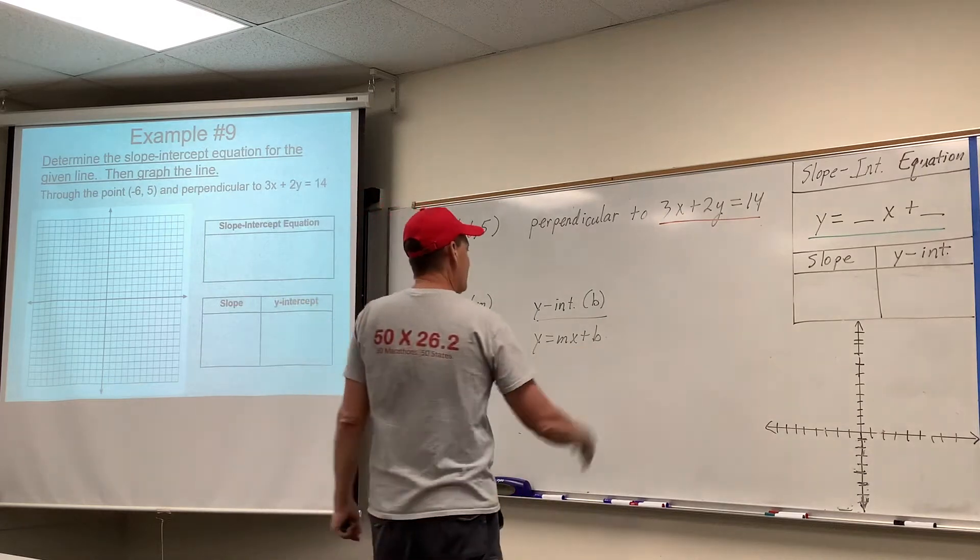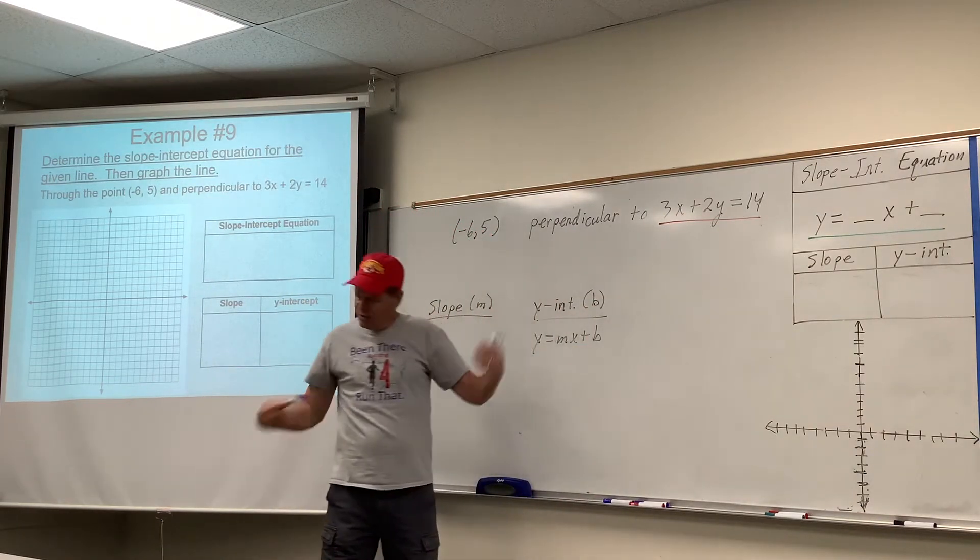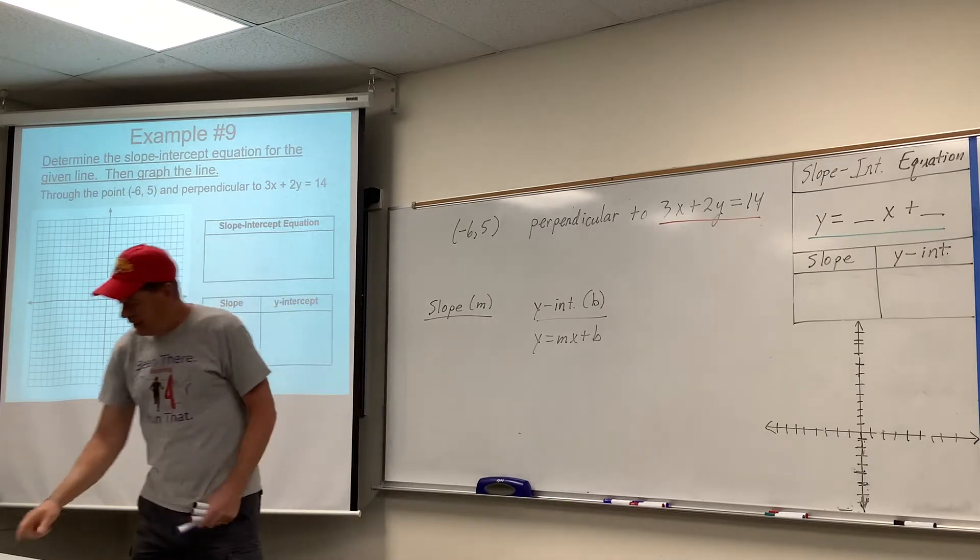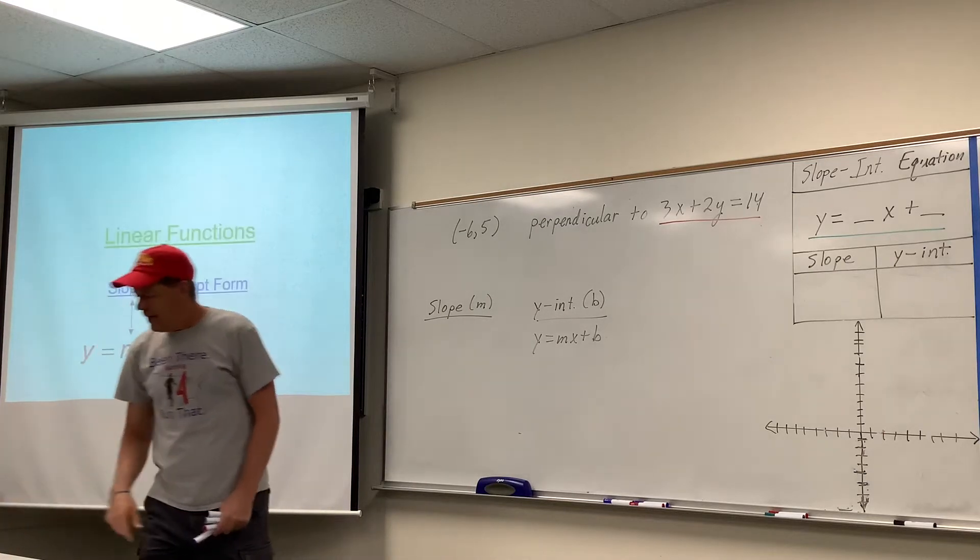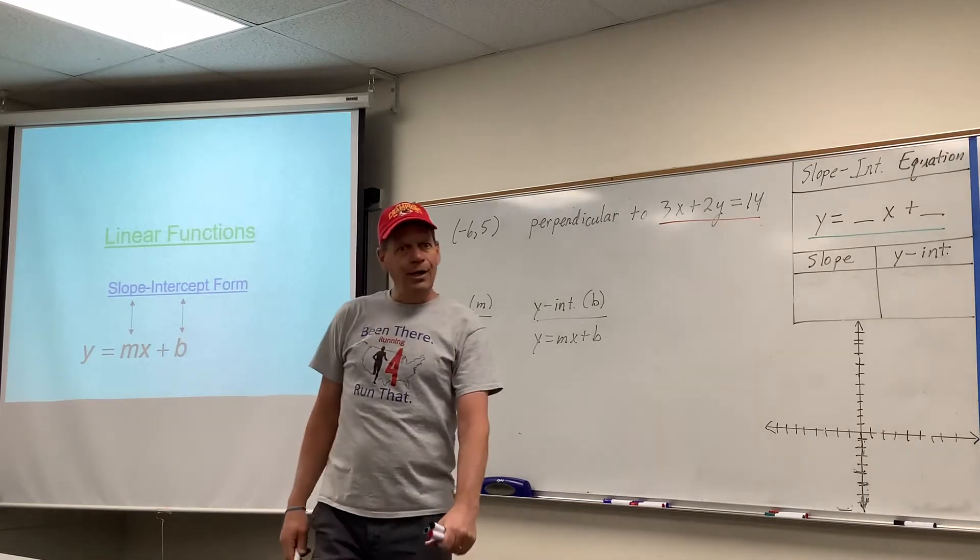So the one they gave us, let's start with that. If we were going to graph that, and this is good practice for that kind of question, let's take the one they gave us. We would hopefully say, hey, that's not slope intercept form there, is it?